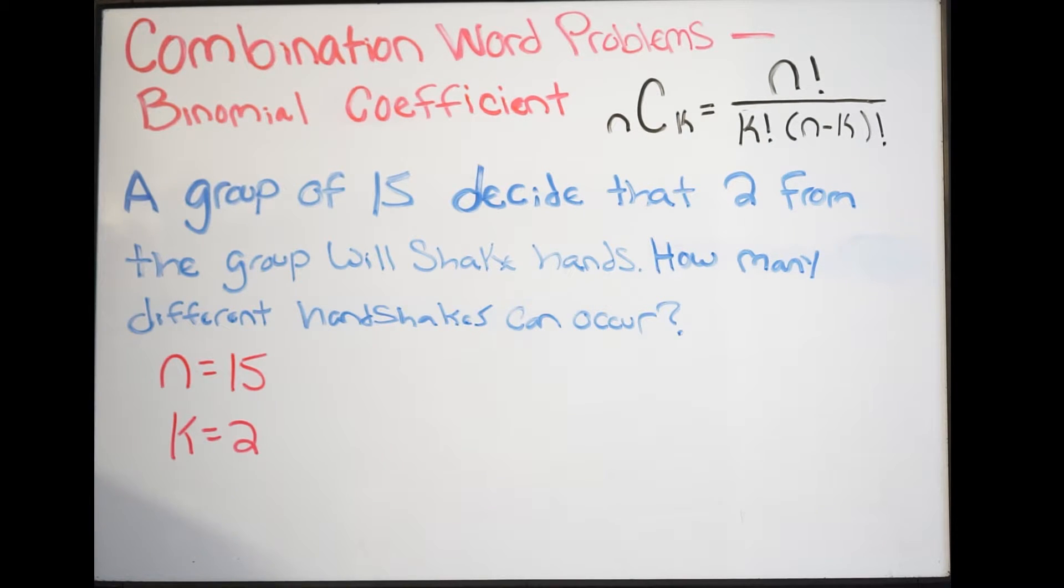When we write this out, we write n choose k, or 15 choose 2. This will be equal to n factorial, which is 15 factorial, over k factorial, so 2 factorial, times n minus k.